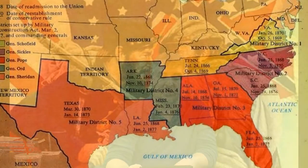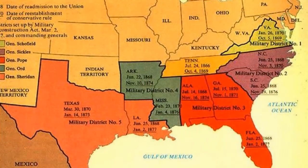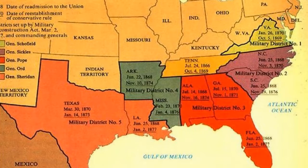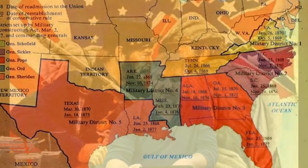Then we hit the period of military reconstruction. In March of 1867, Congress passed the Military Reconstruction Act, doing away with Johnson's reconstruction programs. Former Confederate states, except for Tennessee, which had ratified the 14th Amendment, were placed into five military districts under Union Generals. Each former Confederate state had to write a constitution that gave the right to vote to all adult male citizens and had to ratify the 14th Amendment.